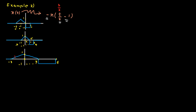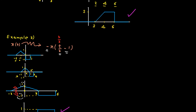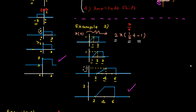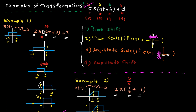Finally, multiply the signal by minus one, which means we need to reflect the signal with respect to the x-axis. The signal doesn't change in the time direction. One on the y-axis goes to minus one, and minus one goes to one. Here is the final answer.